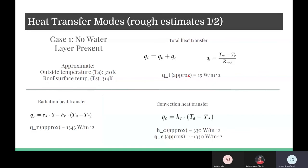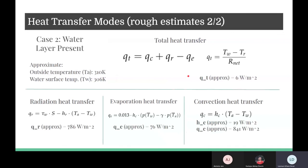Now let us look at the case with a water layer present. The only major difference is the appearance of an evaporative heat transfer term, which depends on the convective heat transfer coefficient and some experimental constant. Taking the same outside temperature of 310 K, solving all equations gives a water surface temperature of 306 K, which is much lower than the 314 K obtained for the bare roof surface. The important result is that the net heat transfer is 6 W/m², which has decreased from 15 W/m² — almost half.